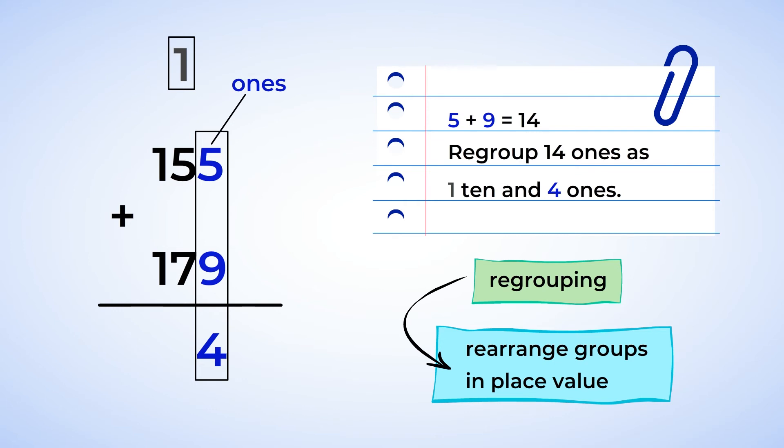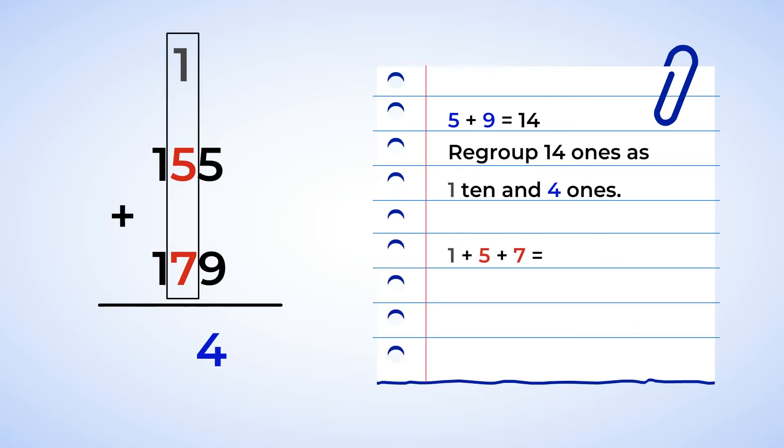Now that you've added the ones place, you can move on to the tens place. In the tens place, I know 5 tens plus 7 tens equals 12 tens. I need to remember to add the one extra ten. We have it here above. This equals 13 tens.